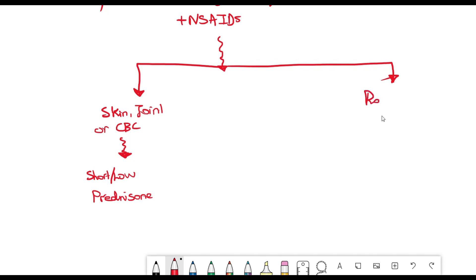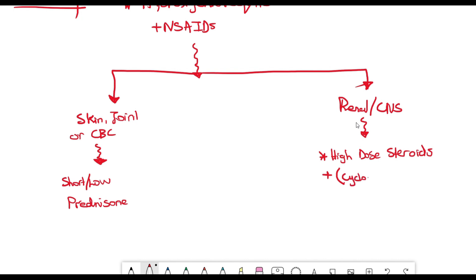Patients with renal or central nervous system involvement have severe SLE manifestations. Then they need high dose steroids and longer course of steroids in addition to immunosuppressant medications, and the best ones we use are cyclophosphamide and mycophenolate.